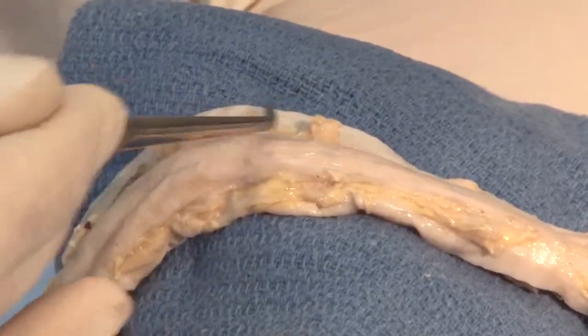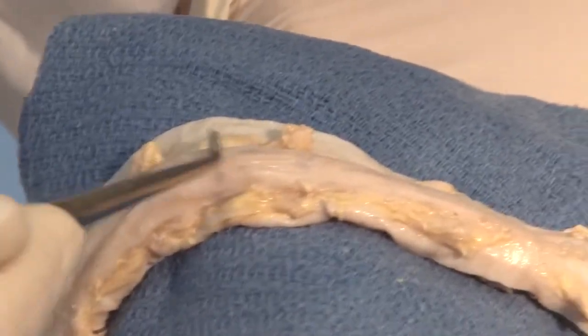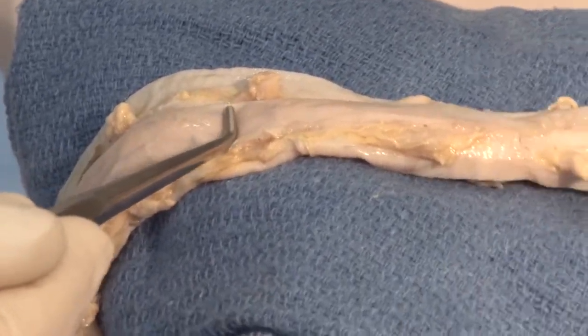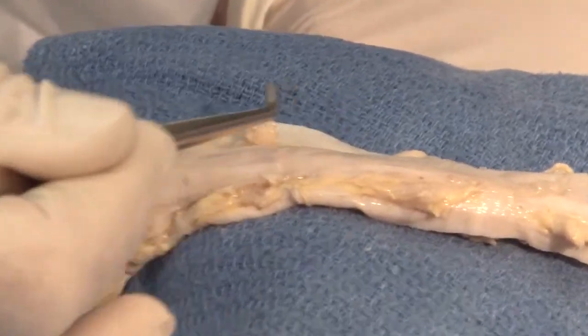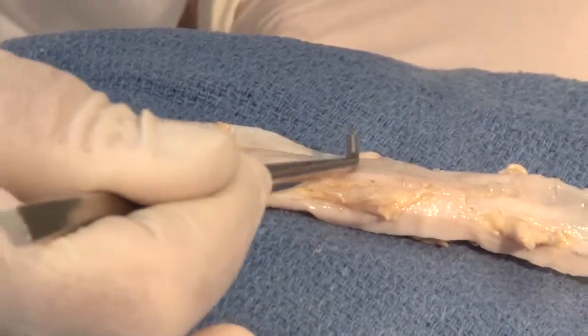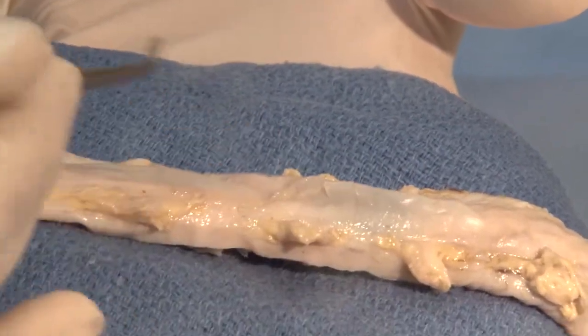The dorsal root ganglion is sensory, but passing through this region here are also the motor fibers. We want to keep in mind that each of these represents a level. I can't tell you exactly where, but this is approximately one segment of the spinal cord. Let's say it's thoracic. This would be thoracic 1, thoracic 2, thoracic 3, approximately like that.